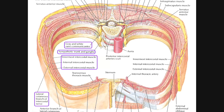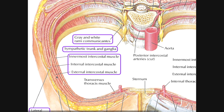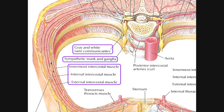Looking at the external intercostal, if we follow it anteriorly, we see that anteriorly it becomes more membranous. The external intercostal is really muscular from its posterior portion up to around the angle of the rib, then it becomes the external intercostal membrane anteriorly. The internal intercostal is muscular anteriorly, which means that the internal intercostal must be posteriorly membranous. Following it around the posterior side, the muscular part terminates and continues as the internal intercostal membrane, which becomes continuous with the innermost intercostal membrane posteriorly.